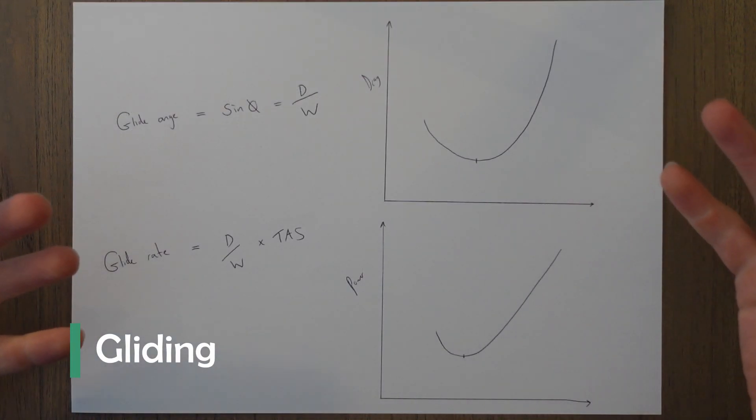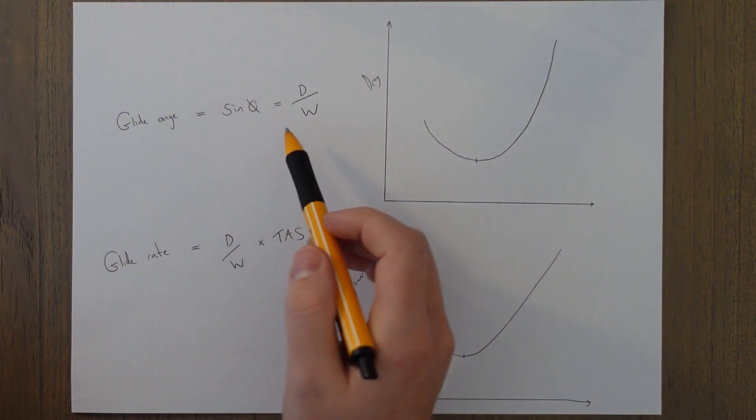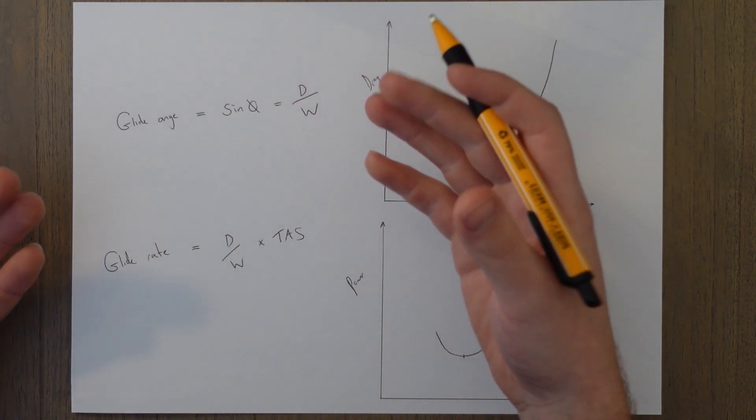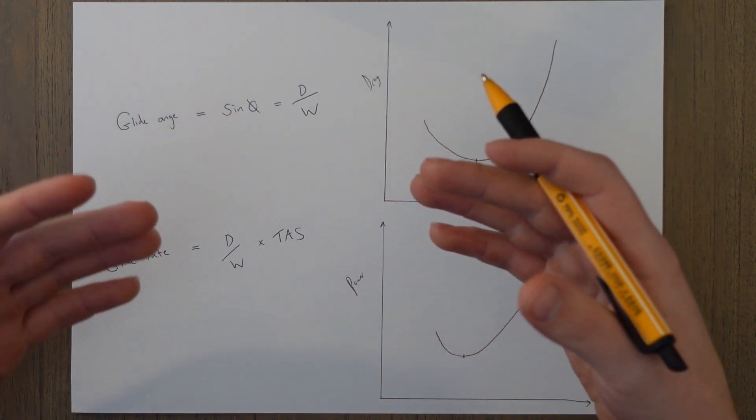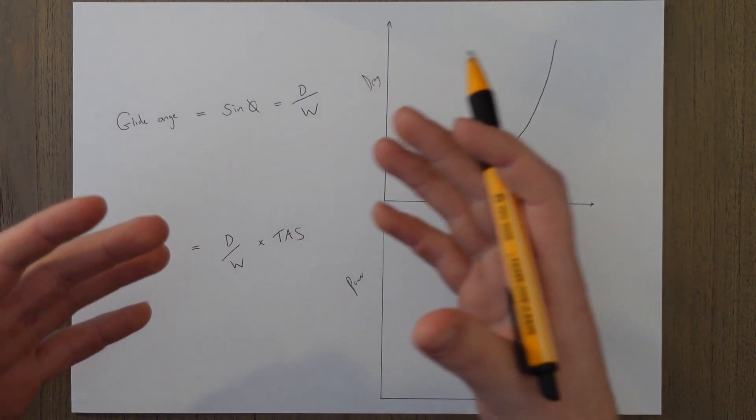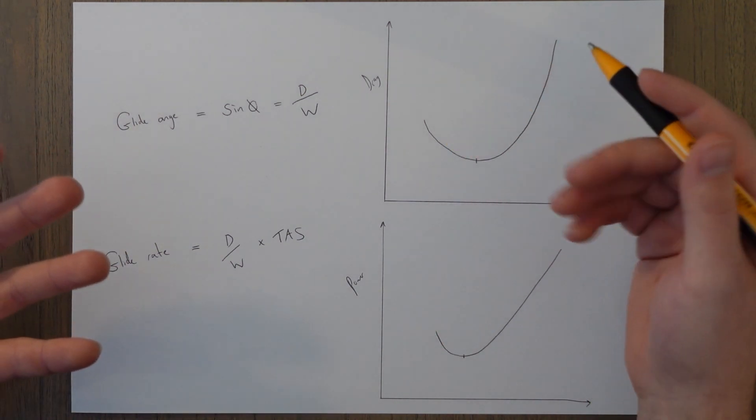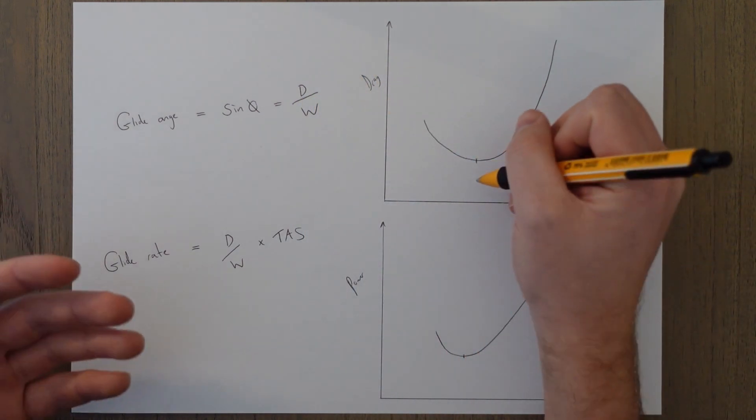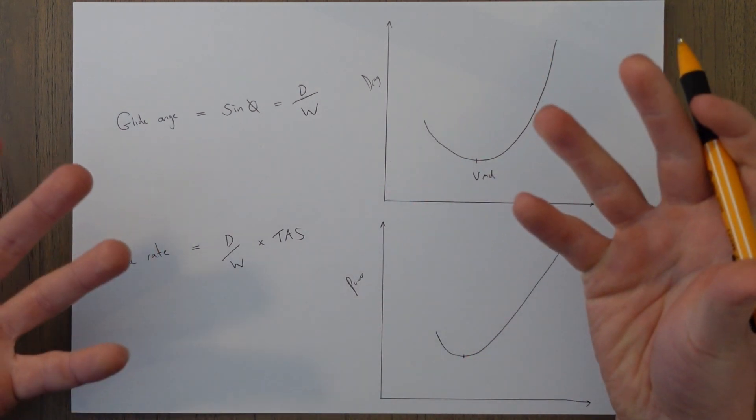A glide is a descent without any thrust, so our equation for angle changes and we basically just take out the thrust element so we have sine theta equals drag over weight. We don't have any thrust to control our angle of descent but generally if we're gliding we want to go at a shallow angle so we can cover as much distance as possible to land somewhere safely. Therefore we want to fly at a speed where our drag is minimized and that speed would be VMD. Notice there's no thrust line here because there is no thrust, we're gliding.